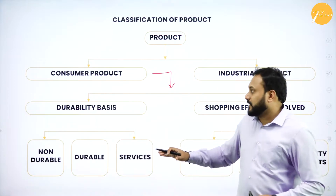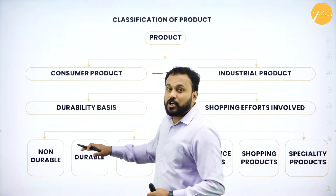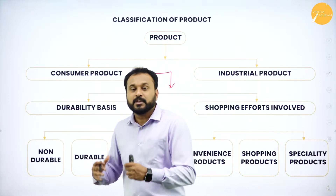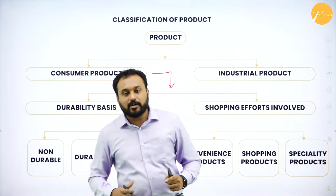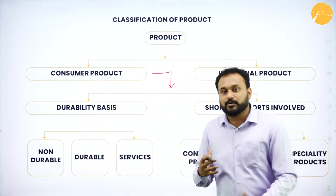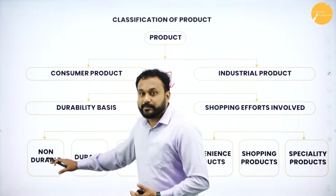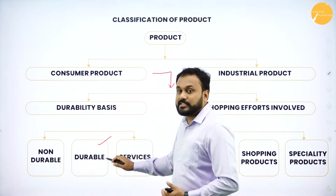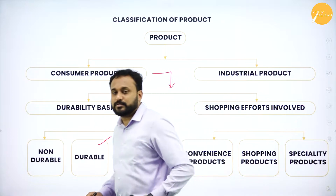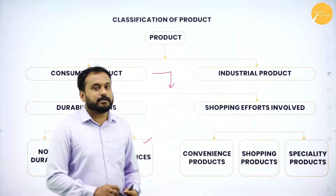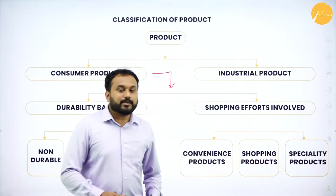On the basis of durability, there are three branches. The first is non-durable — products that have one or very few uses, like a Kurkure packet, which is consumed within a day or a week. The next is durable — products you use over a longer period. The last is services, which must accompany goods for customers to come and buy.